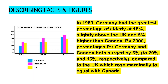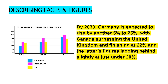In 1980, Germany had the greatest percentage of elderly at 15%, slightly above the UK and 5% higher than Canada. By 2000, percentages for Germany and Canada both surged by 5% to 20% and 15% respectively, compared to the UK, which rose marginally to equal with Canada. By 2030, Germany is expected to rise by another 5% to 25%, with Canada surpassing the UK and finishing at 22%, with the latter lagging behind slightly at just under 20%.